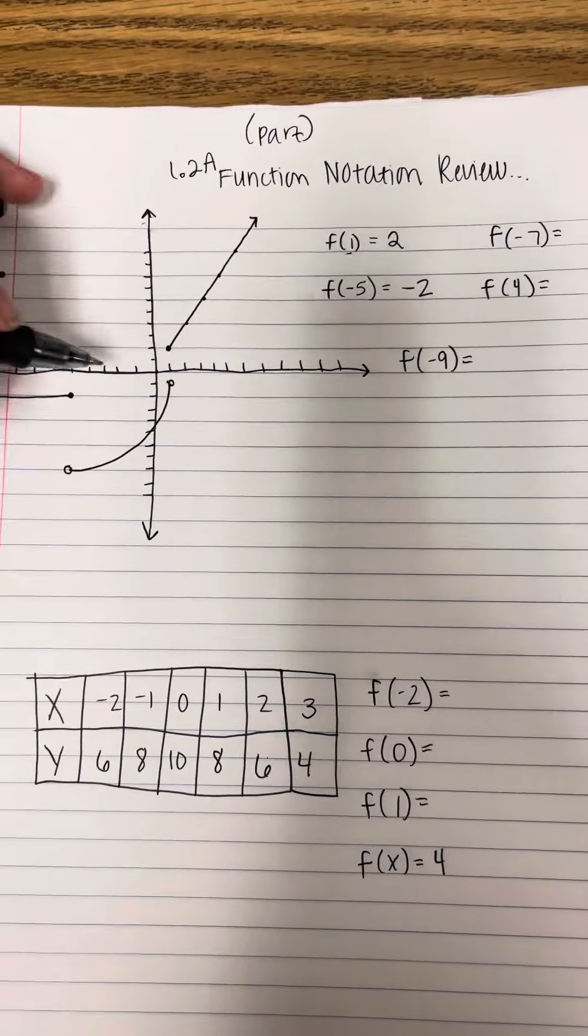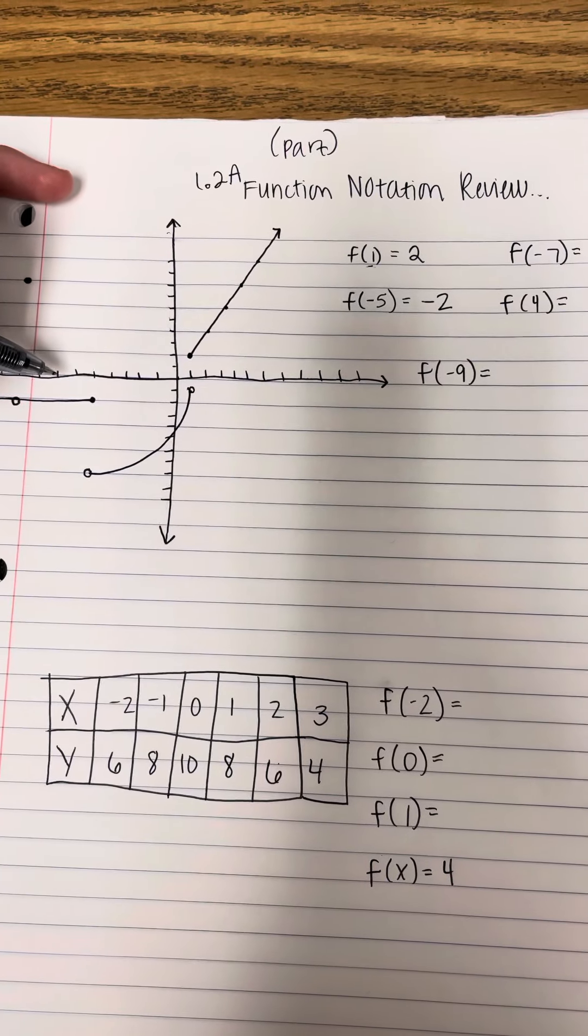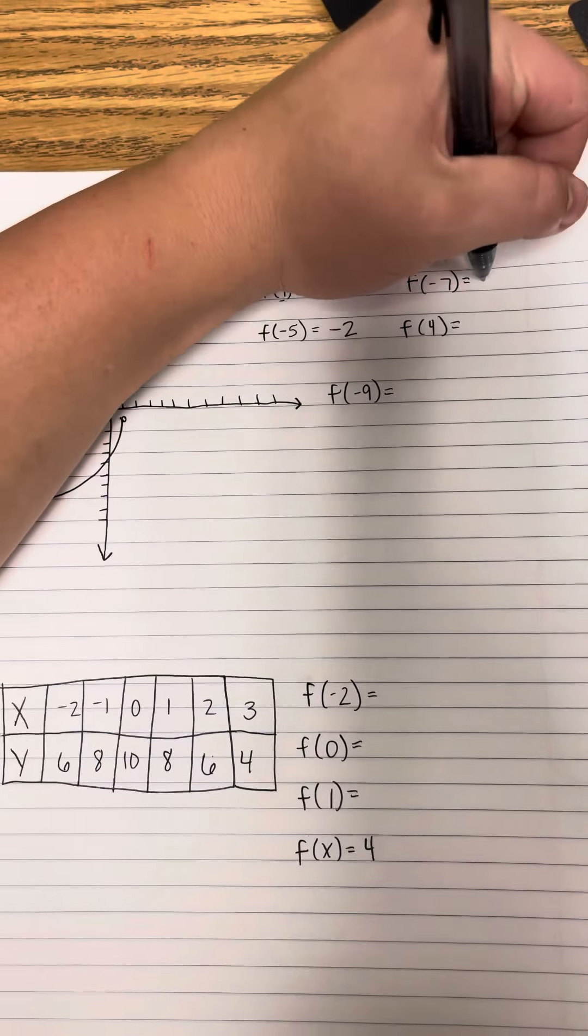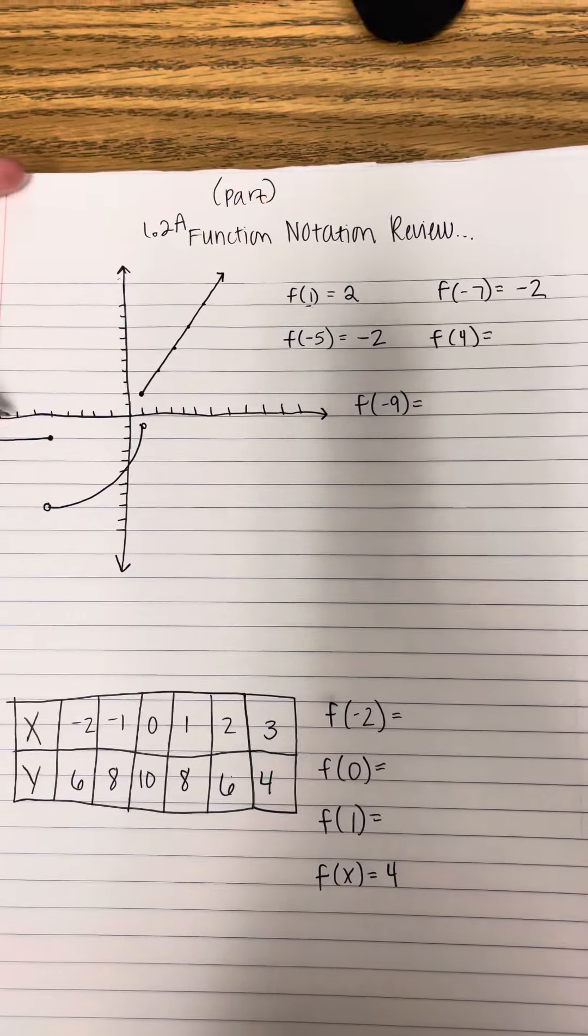When x is negative 7, negative 5, negative 6, negative 7, it is also negative 2. So even though there's no dot, it's still the value. It's still a line.